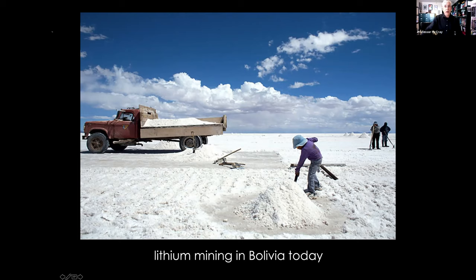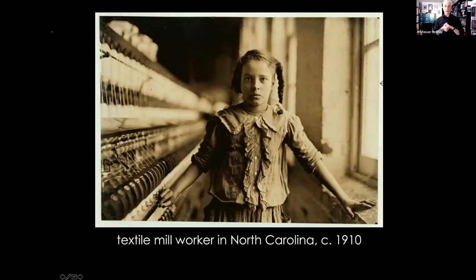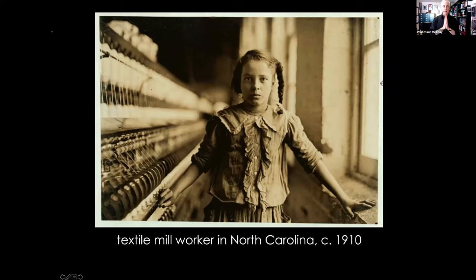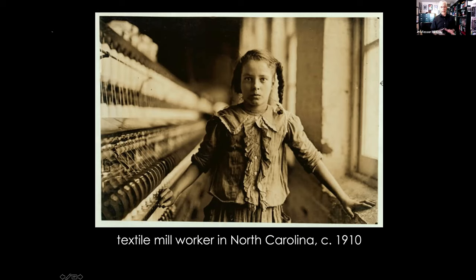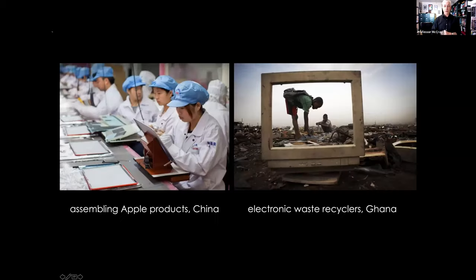Even though we might think of our digital technologies as clean and benign and somehow lacking in materiality, they are very tightly bound to the world of stuff. Their thinginess encourages us to consider questions of health and safety and human rights and the environment. Because in almost all pictures of server farms and cloud computing, one thing is conspicuously absent: workers. When we think of past industrial revolutions, we have iconic images that remind us that they relied on the combined labor of millions of people, many laboring in less than desirable conditions — many indeed laboring as slaves.